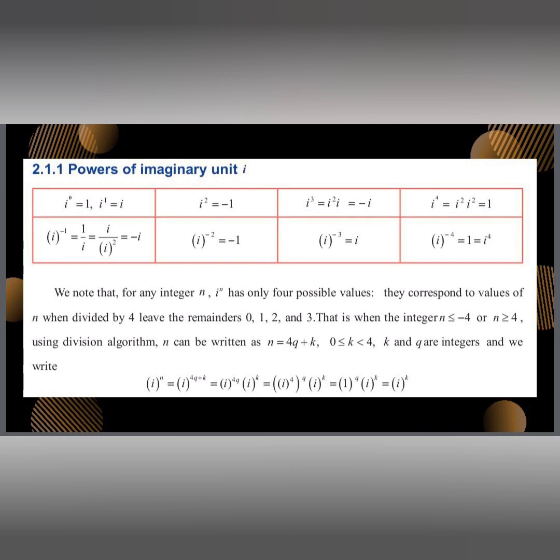i power 0 is 1, i power 1 is i, i squared is root of minus 1 into root of minus 1, which gives minus 1. i cubed is i squared into i, that is minus i. i power 4 is again 1. Similarly, i power minus 1, minus 2, minus 3, minus 4 can be calculated. Finally, we conclude that i power n has only 4 possible values, corresponding to the remainders when n is divided by 4: 0, 1, 2, and 3. So i power n can be written as i power 4q plus k, where k lies between 0 and 4 and k, q are integers.